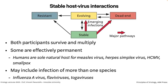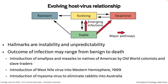Stable host-virus interactions: both participants coexist — for humans, examples include measles virus, herpes viruses, and smallpox (now eradicated). Sometimes more than one species is involved, like influenza viruses with chickens, birds, pigs, and humans. The evolving interaction occurs when a virus from a stable interaction spills into a different host or a naive population of the same species. For example, when Europeans came to the Americas, they brought viruses that native Americans had never seen — a spillover into a new population of the same species.